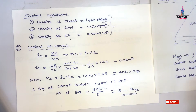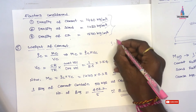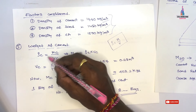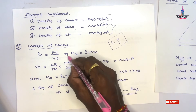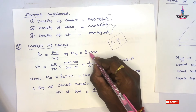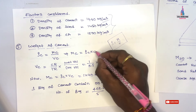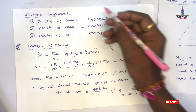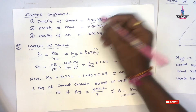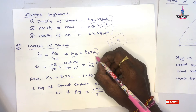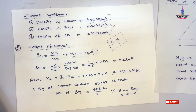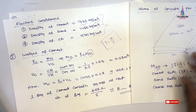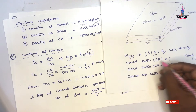We know that density equals mass divided by volume. Applying this for cement: density of cement equals mass of cement divided by volume of cement, so mass of cement equals density of cement multiplied by volume of cement. To find the volume of cement, we use: volume of cement (Vc) equals cement ratio divided by total ratio, multiplied by the wet-to-dry volume ratio.